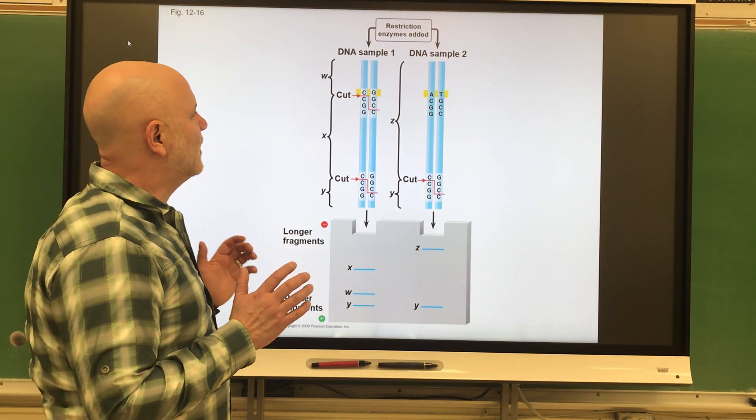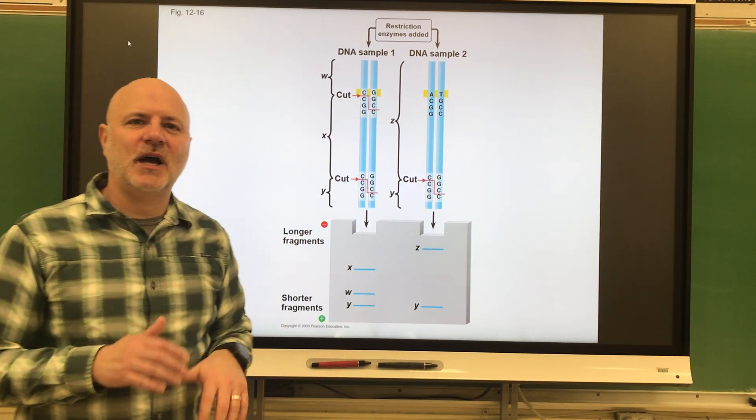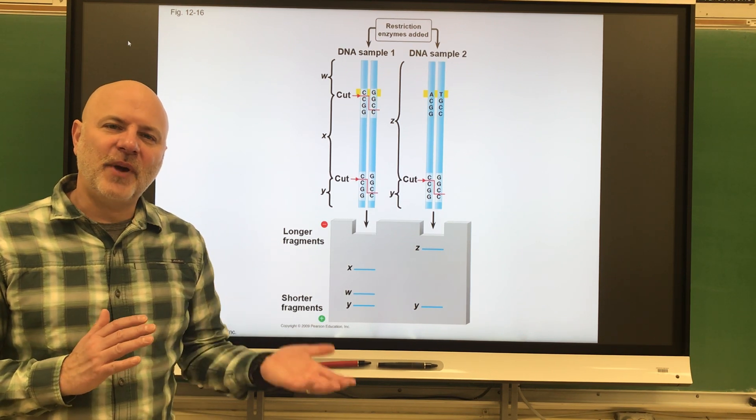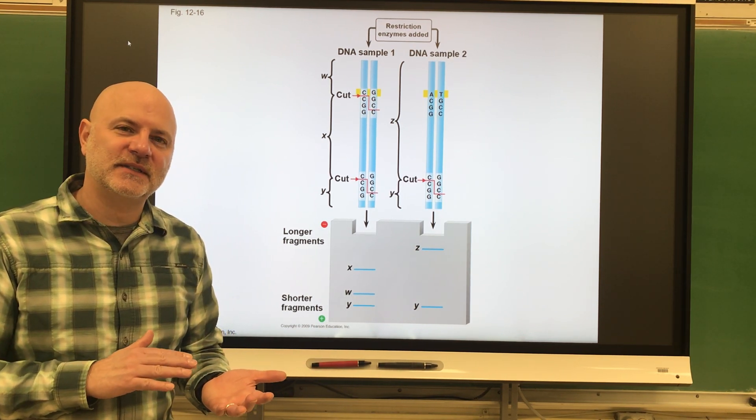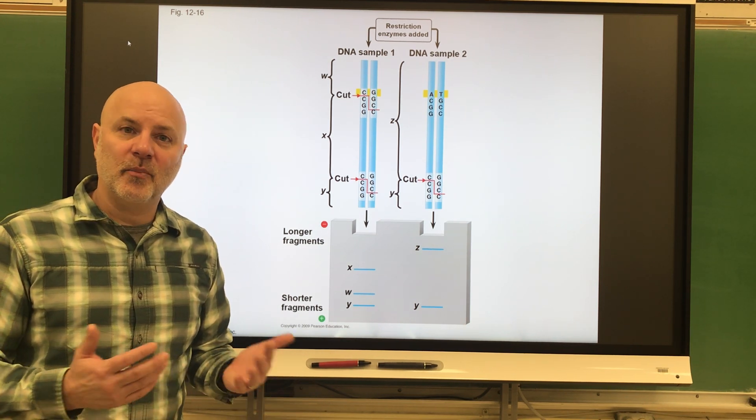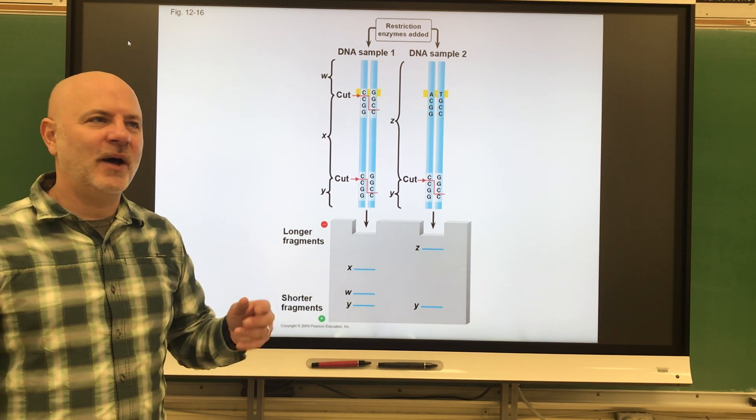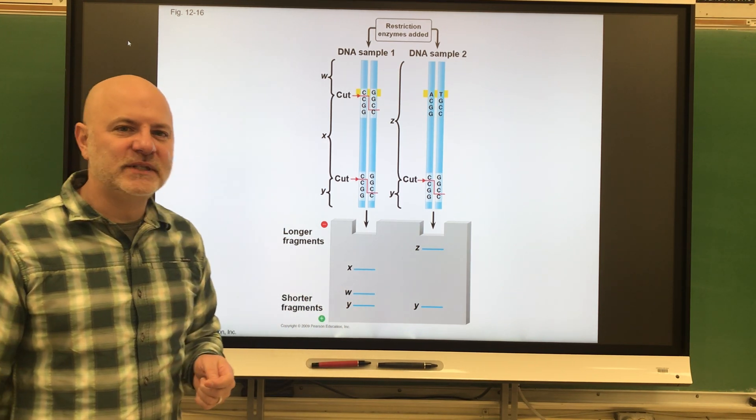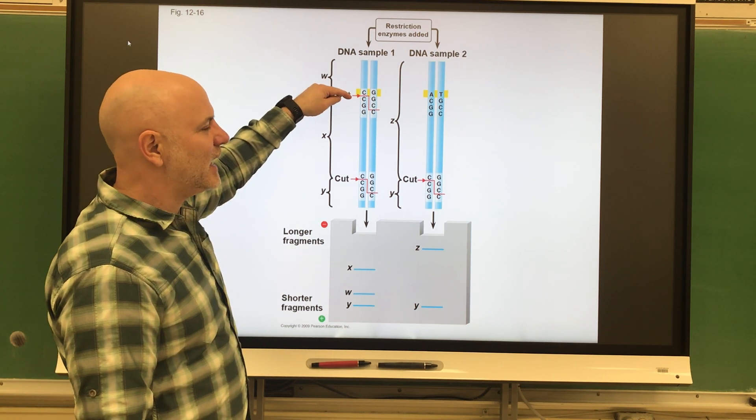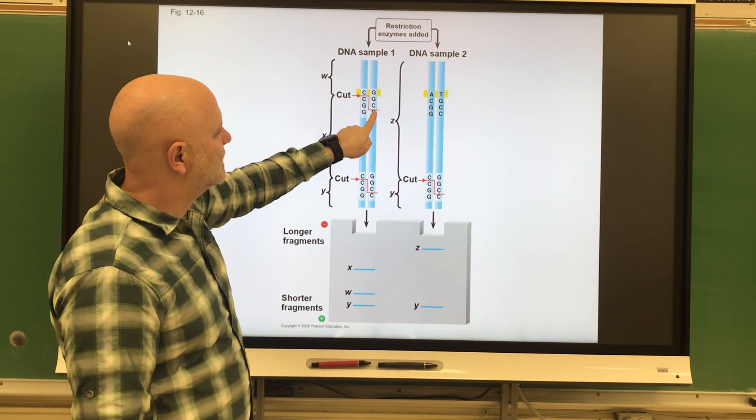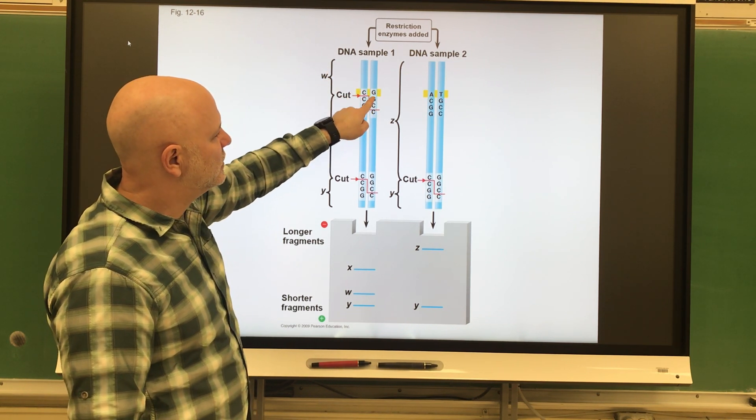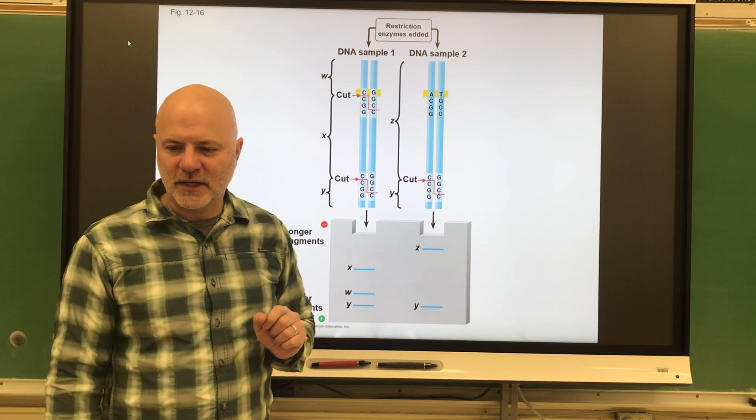Restriction enzymes cut in what are known as DNA palindrome areas. A palindrome in the English language is a word that is spelled the same forward and backward. But with DNA, a DNA palindrome is the same in this direction as it is in that direction. We see CCGG, CCGG. That's what we're looking for.